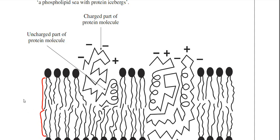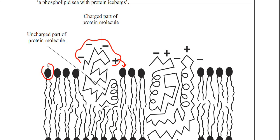The hydrophobic tails are water-hating, and it's only non-polar or non-charged regions of a protein that can interact with those hydrophobic tails. The charged regions of the membrane are located outside of the membrane or just in contact with the phosphate heads of the phospholipid. This region here is the hydrophilic or water-loving head of the phospholipid.